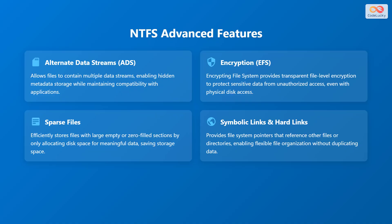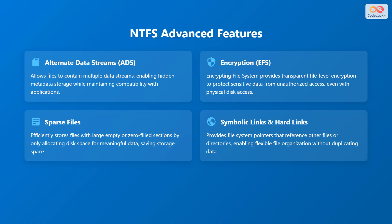The advanced features of NTFS include: Alternate Data Streams (ADS), which allows files to contain multiple data streams, enabling hidden metadata storage while maintaining compatibility with applications. Encrypting File System (EFS) provides transparent file-level encryption to protect sensitive data from unauthorized access, even with physical disk access. Sparse files efficiently store files with large empty or zero-filled sections by only allocating disk space for meaningful data, saving storage space. Symbolic links and hard links provide file system pointers that reference other files or directories, enabling flexible file organization without duplicating data.